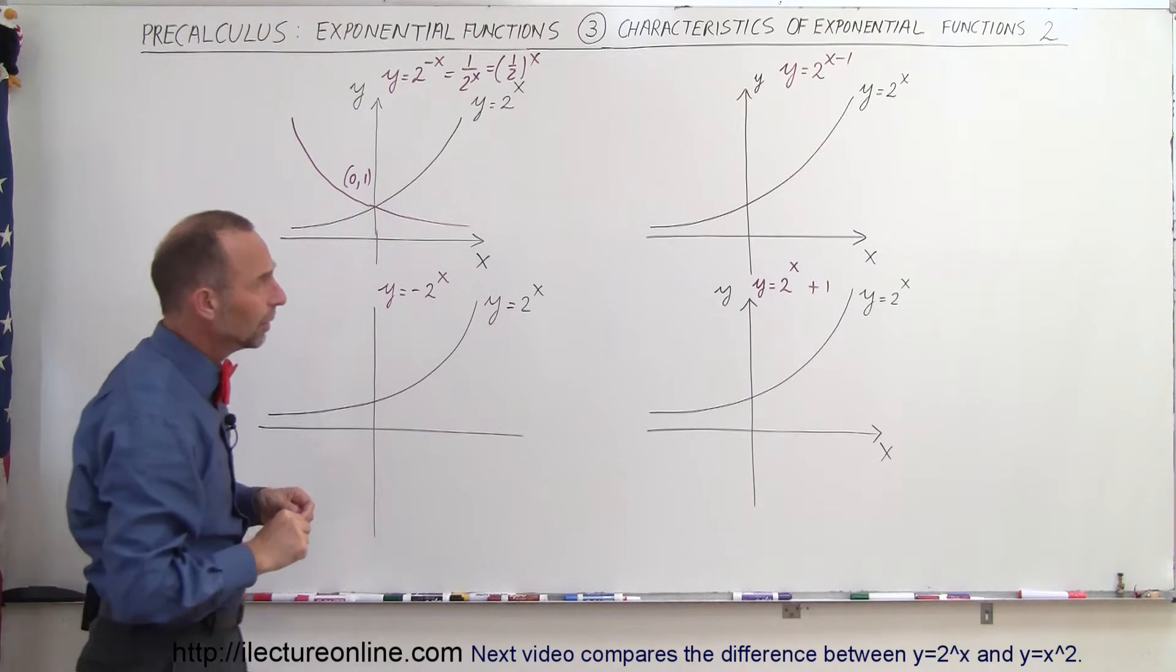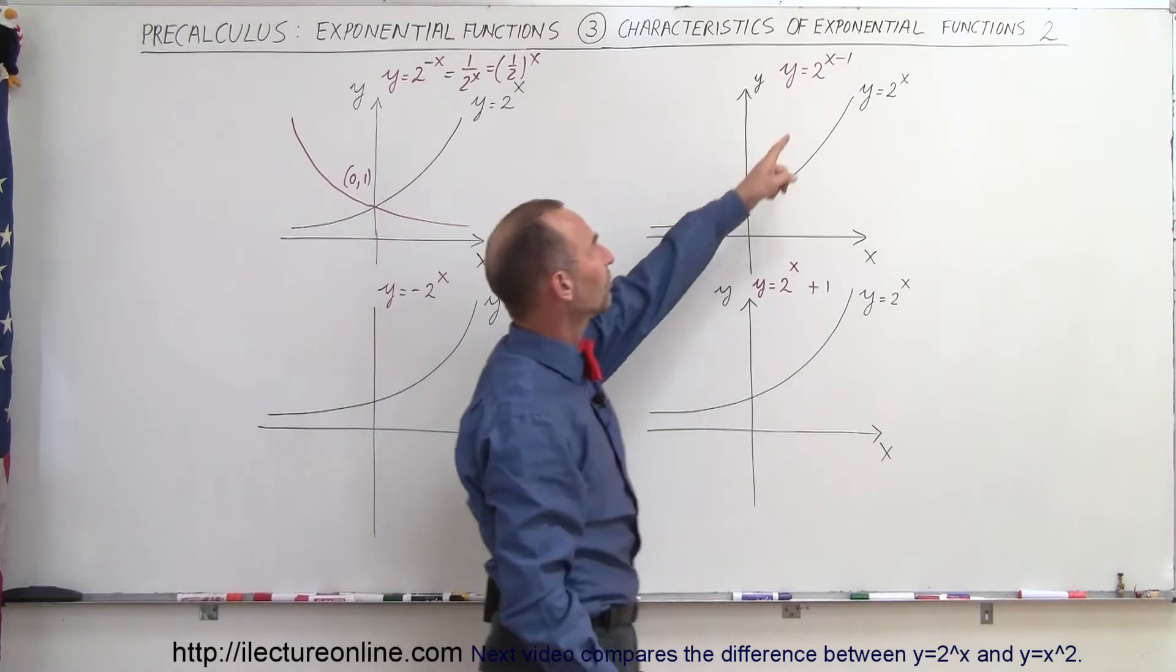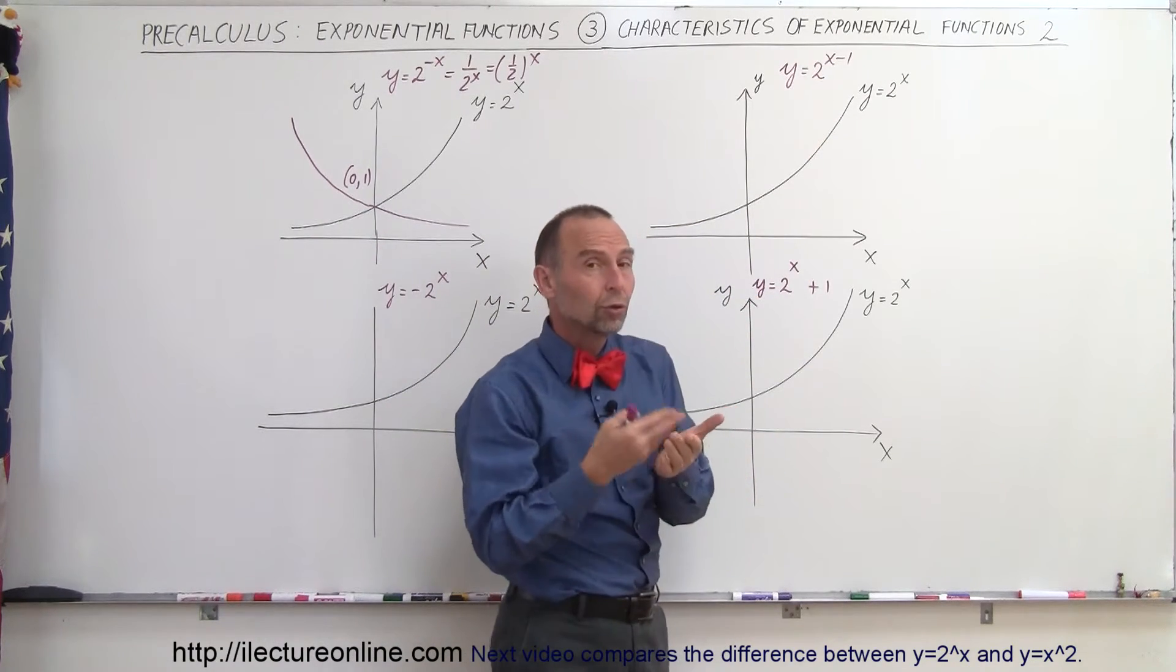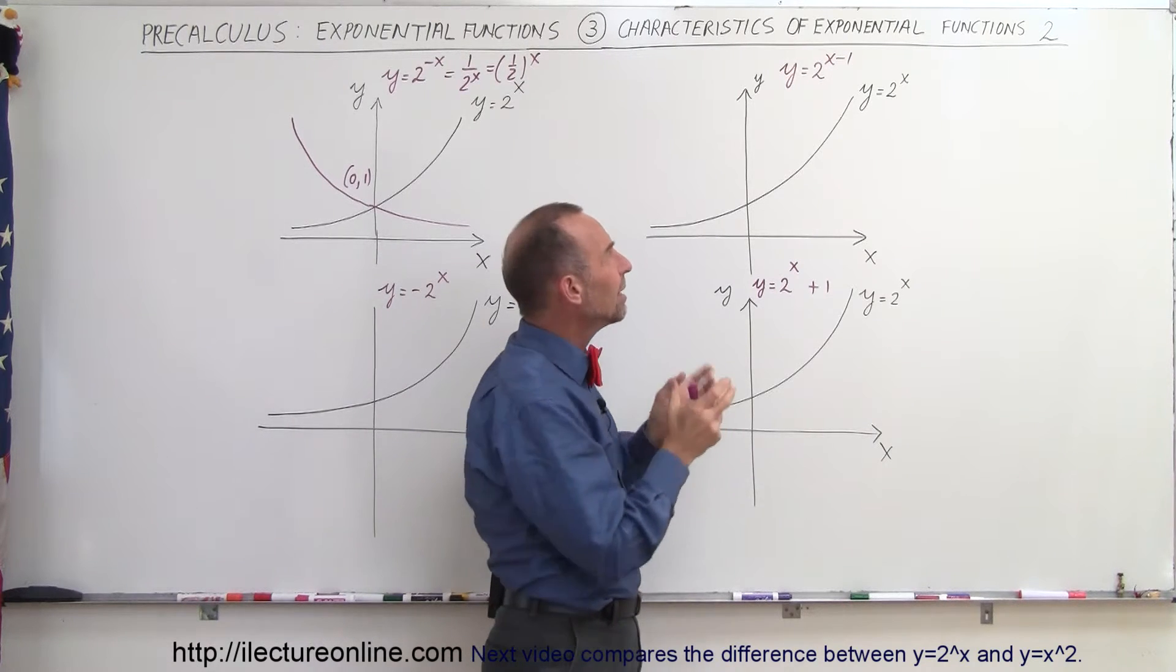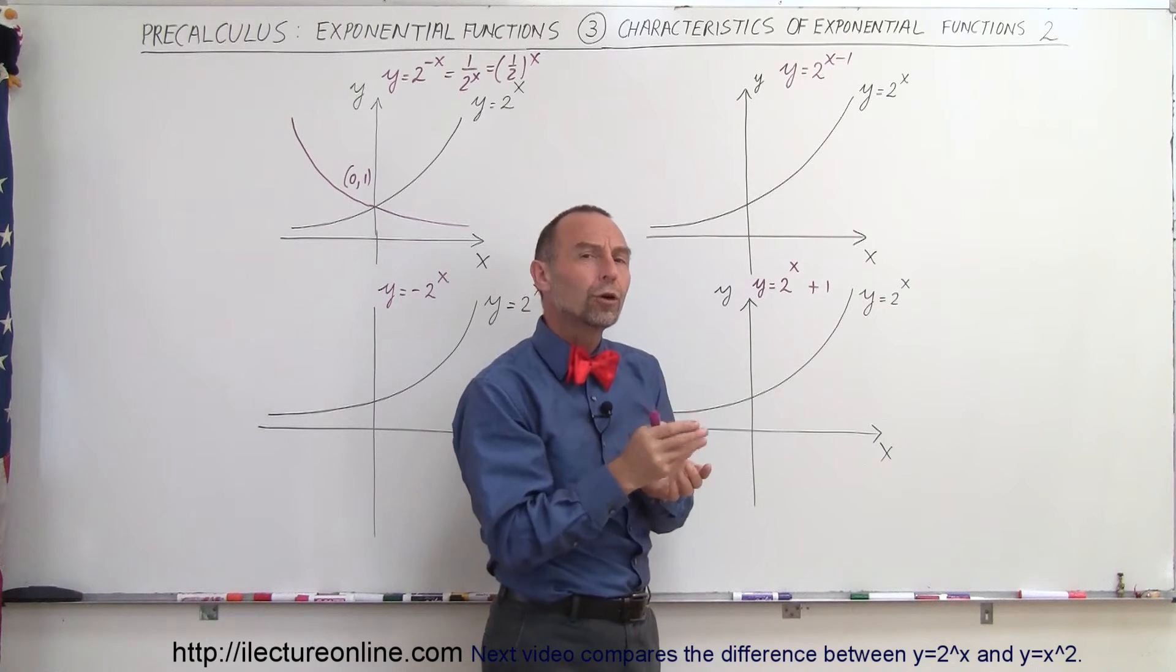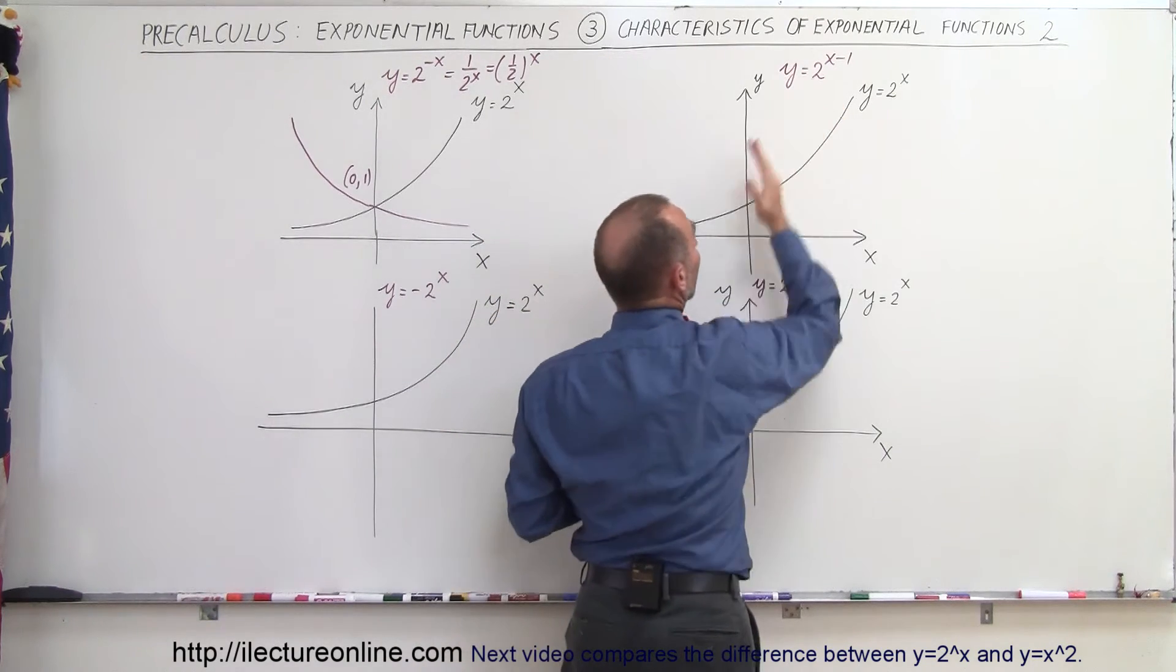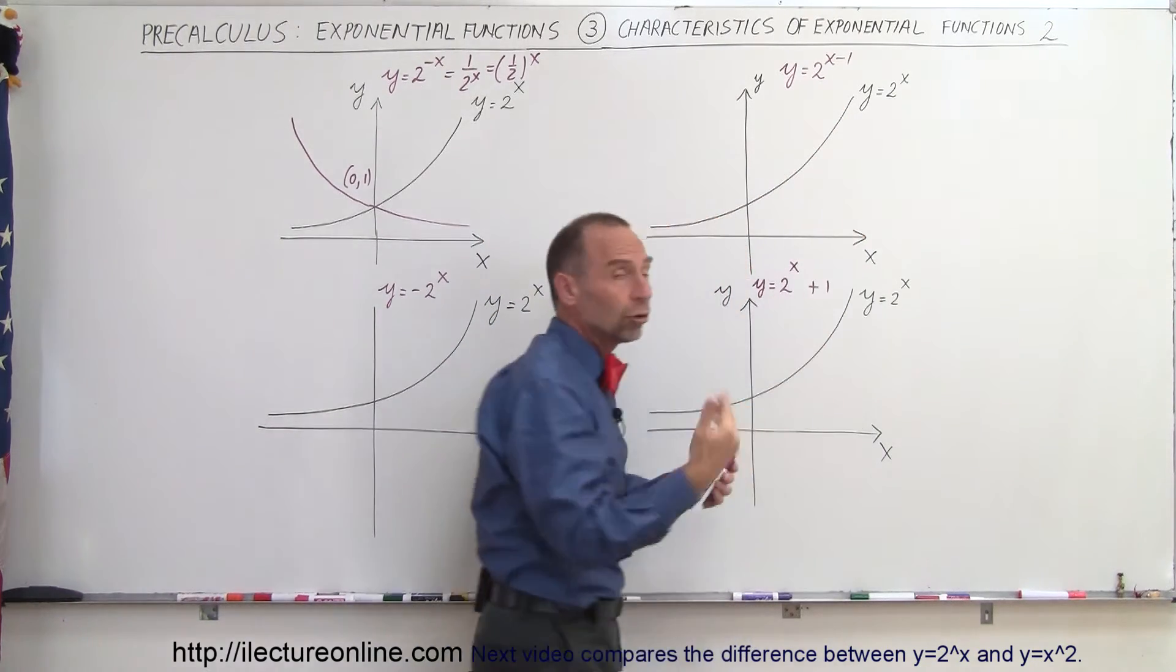Looking at our second example, what happens when we subtract 1 from the exponent? Well that means that when x equals 2, 2 minus 1 is equal to 1. That means it really moves the function over, either to the right or to the left. When we put a negative in there, it moves the function to the right because it takes longer to grow.